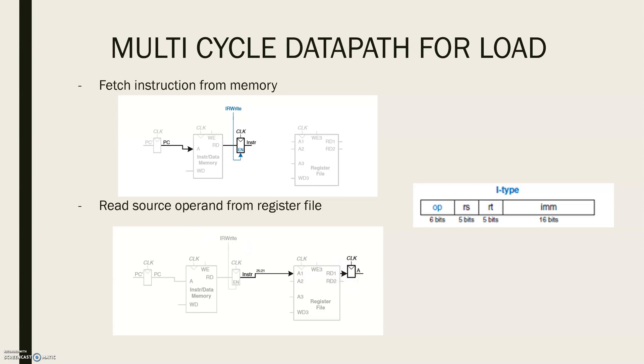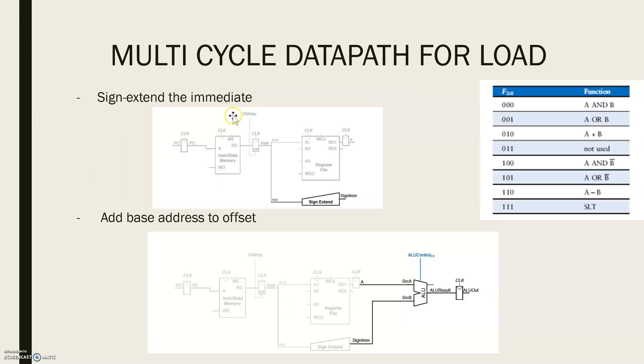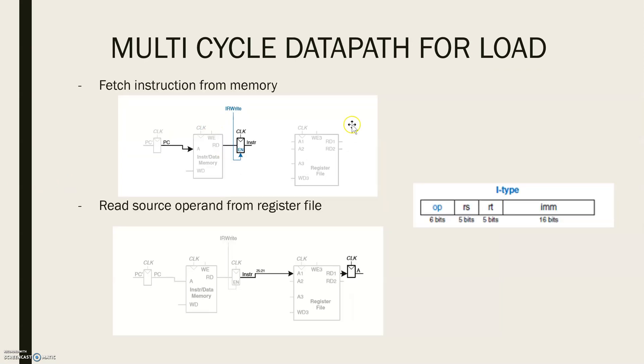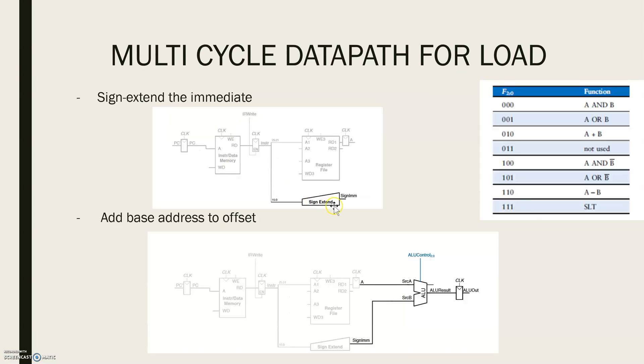Load also requires an offset from this field. This offset will be stored in the immediate field of the instruction, bits 0 to 15, and it must be sign-extended to 32 bits. This 32-bit sign-extended value is called SignImm. To be consistent we might store this in another non-architectural register, but since this is a combinational function of the instruction and it will not change while the current instruction is being processed, there is no need to dedicate a register to hold this constant value.